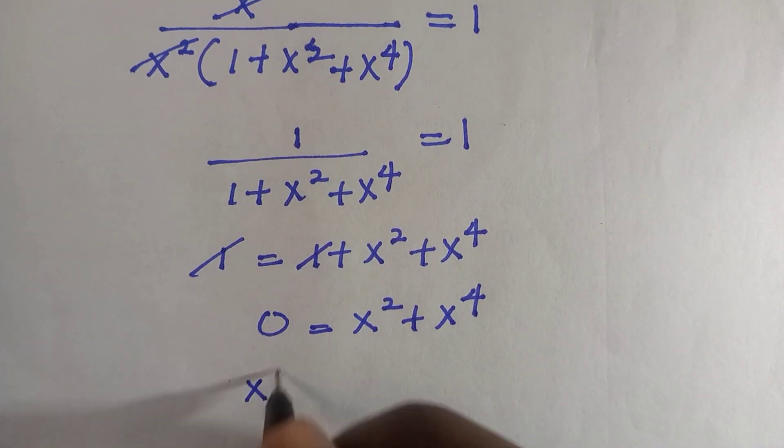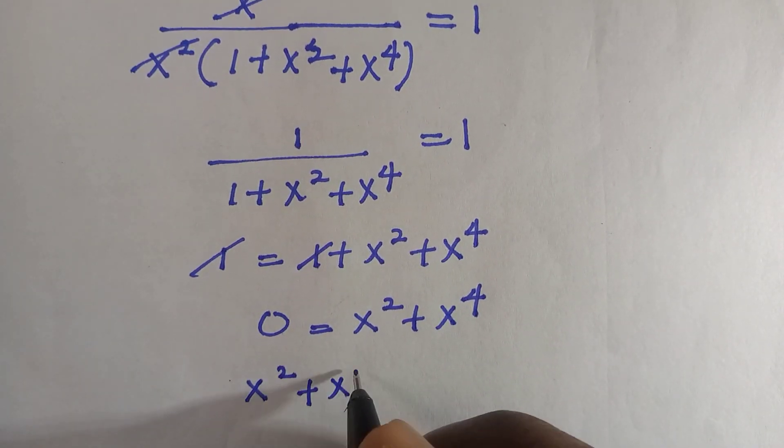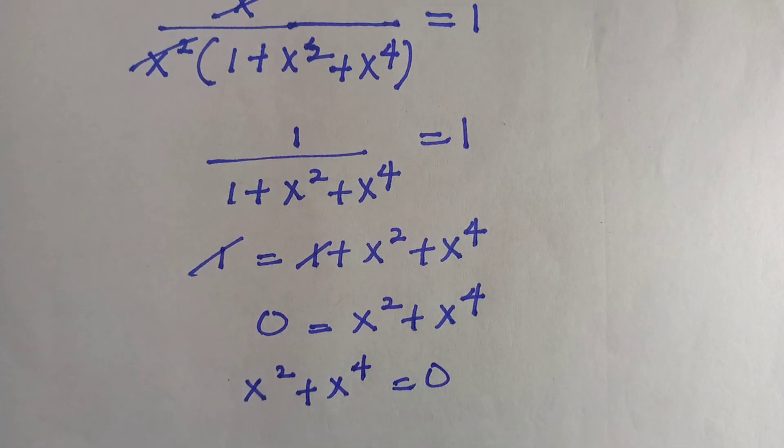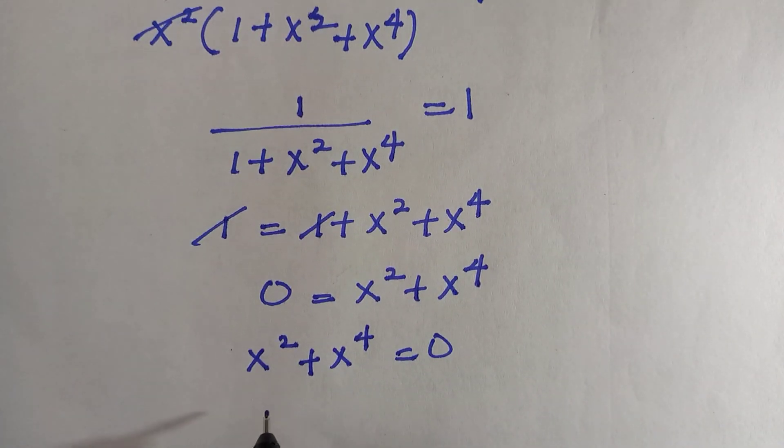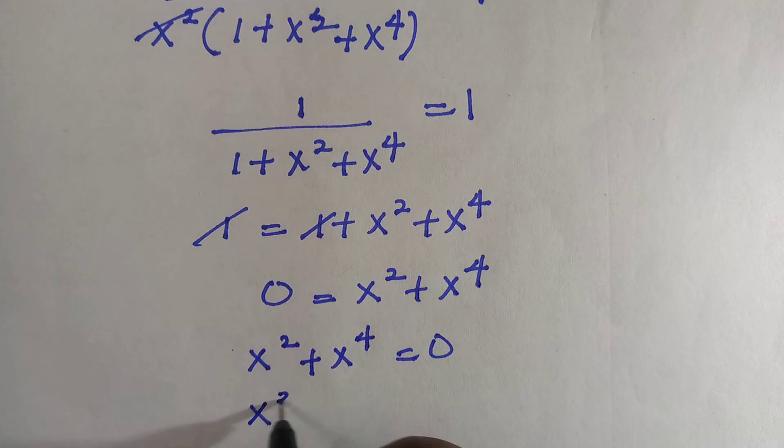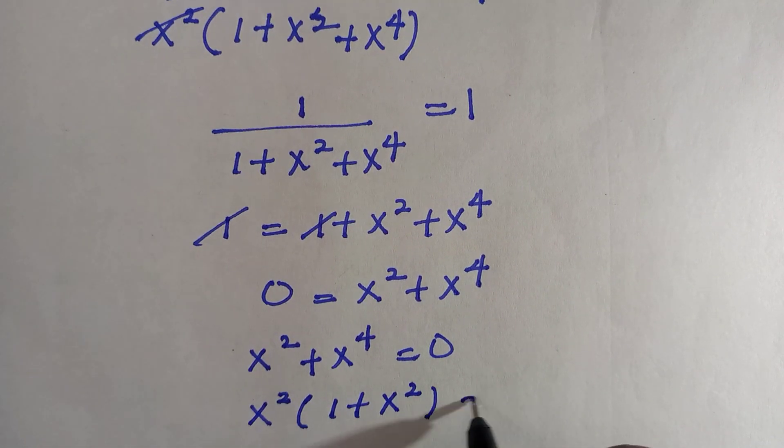So here, I can simply write this as x squared plus x raised to power 4 equals 0, just taking this thing to the left hand side, and I will factorize x squared out. So by doing this, we have x squared times (1 plus x squared) equals 0.